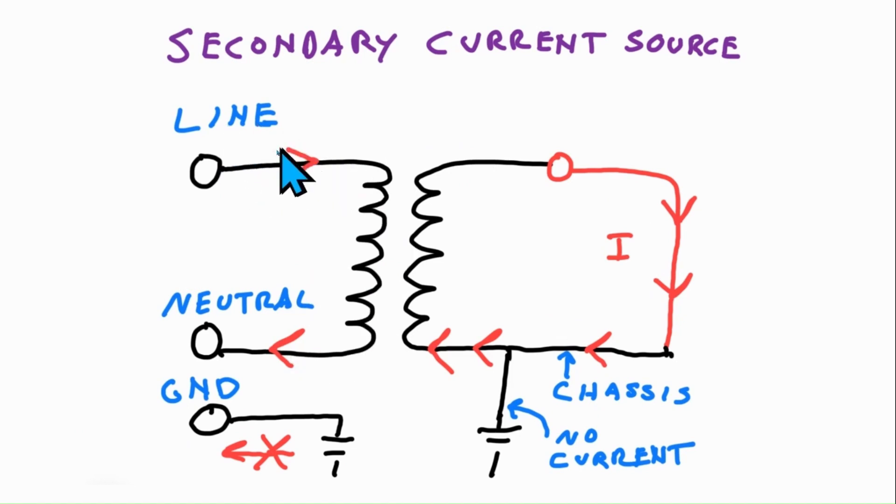So the current through line and the current through neutral still is the same, even though we have current flowing into the chassis and then back into the secondary source of current. So that's how you're able to pass current through the chassis and grounded chassis without tripping the GFCI.